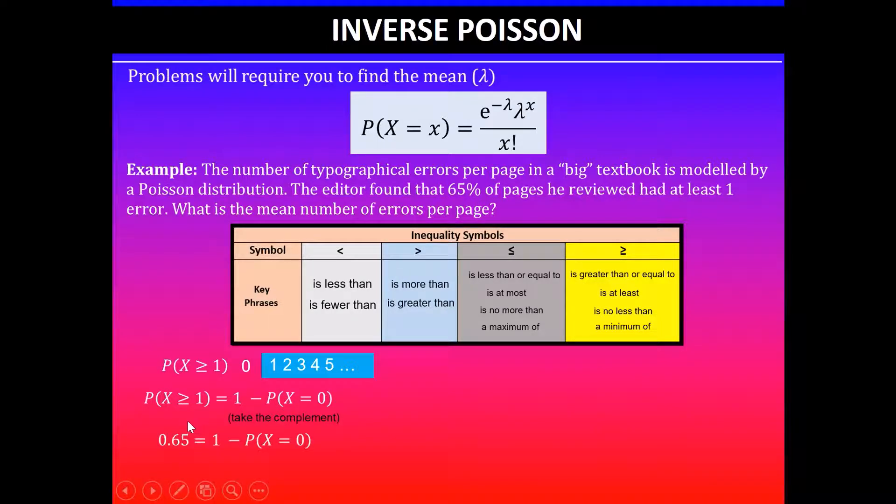In this question we are already given that the probability when x is greater than or equal to one is 0.65. So 0.65 is equal to one minus probability when x equals zero.